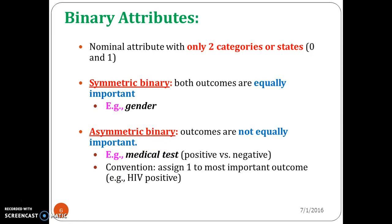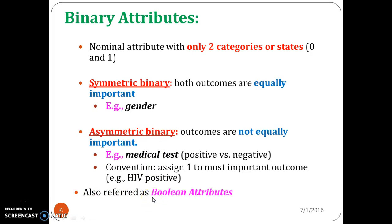Since the outcome is either 0 or 1, a binary attribute is also called a Boolean attribute.